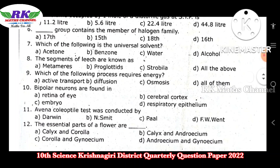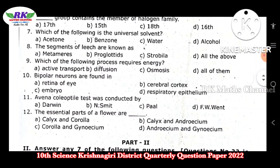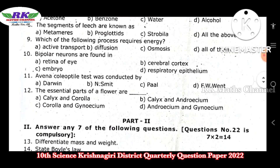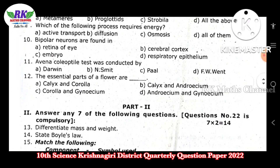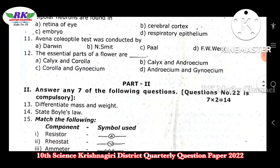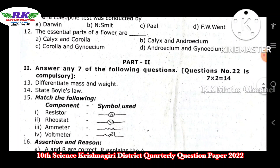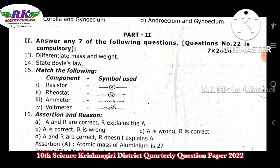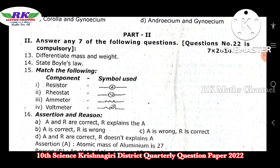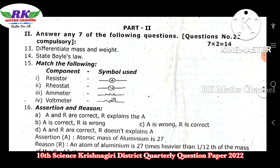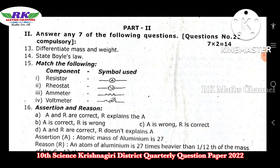First, 12 bits. Next, Part 2 — the answer is 7 questions, and question number 22 is one more compulsory question. Seven times two equals 14 marks.